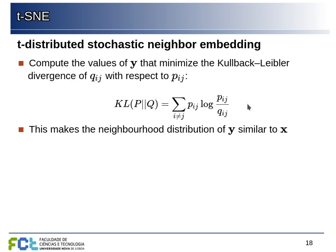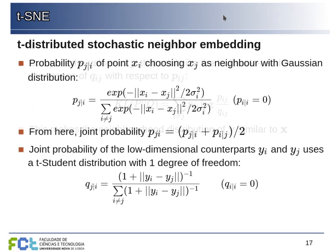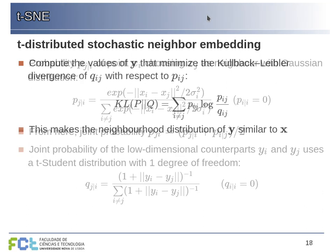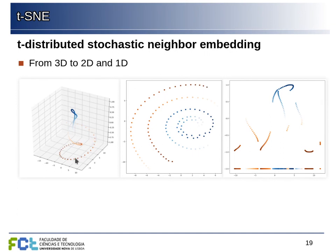We have the distribution of probabilities for points selecting each other as neighbors in the original high-dimensional space, and we want to optimize the transformation between X and the lower-dimensional representation Y such that we minimize the KL divergence between the two distributions. The KL divergence is a measure of how dissimilar two probability distributions are. So we are creating a transformation Y of our initial X values such that the distribution of neighbor-picking probabilities in Y is as close as possible to that in the original space.